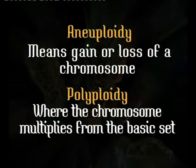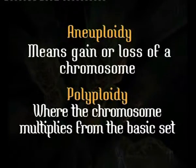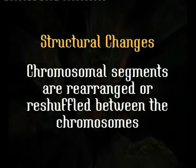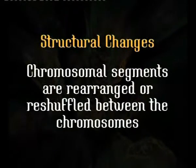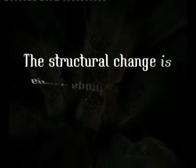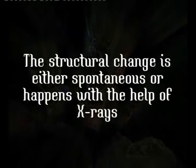Polyploidy is where the chromosomal complement multiplies from the basic set. On the other hand, we have structural changes in the chromosome where chromosomal segments are rearranged or reshuffled between the chromosomes. These structural changes occur either spontaneously in nature or with the help of x-rays, mechanical shear, gamma rays, or transposable elements which are generally present in the chromosomes.